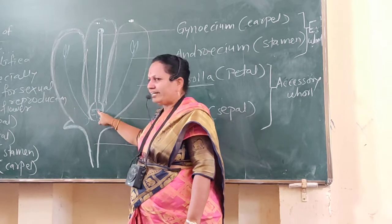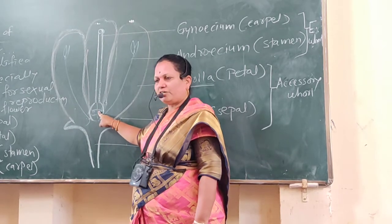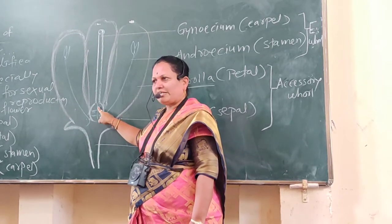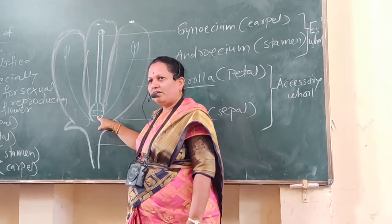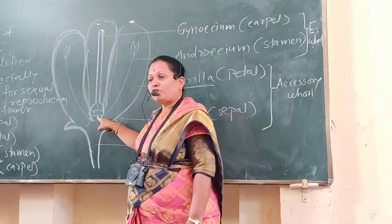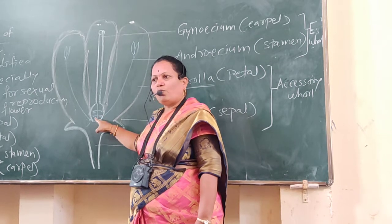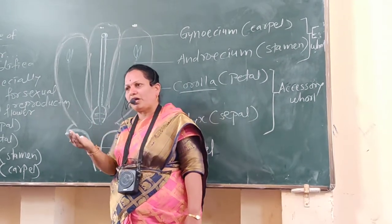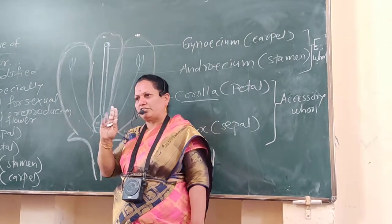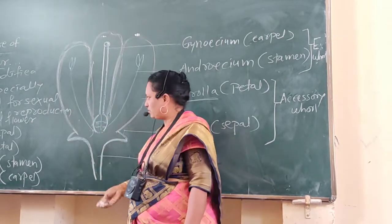Gynoecium is the female reproductive structure. The basal part of gynoecium is called the ovary. What is the function of the ovary? The ovary is converted into fruit after pollination and fertilization.